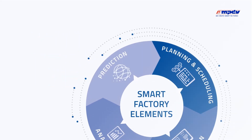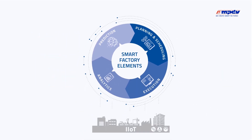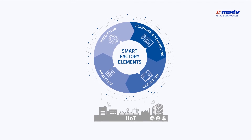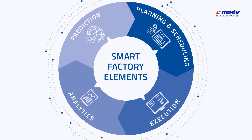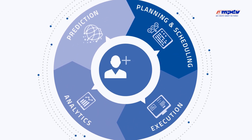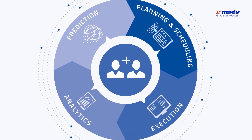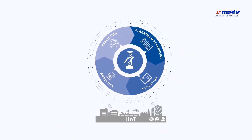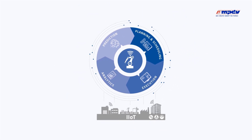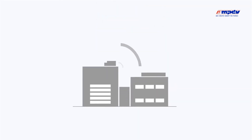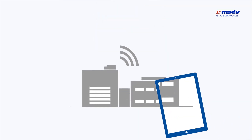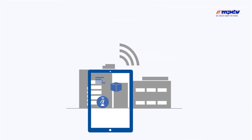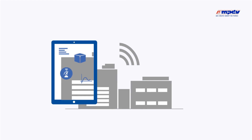The cycle is supported by the Industrial Internet of Things, which collects and provides data. You can identify your own requirements and formulate them for future applications with a Smart Factory Elements model. The result is a precise plan on how you can realize your vision of a Smart Factory effectively.